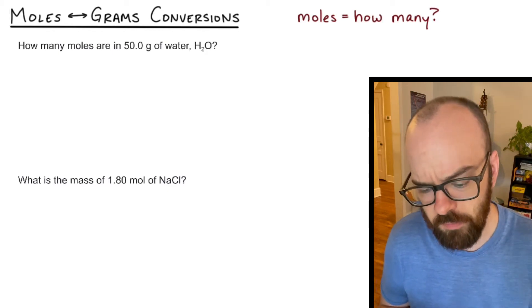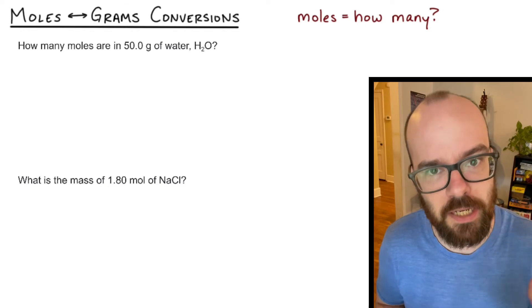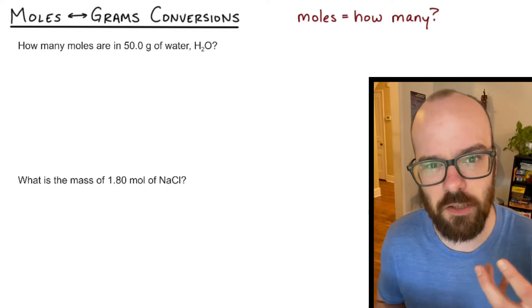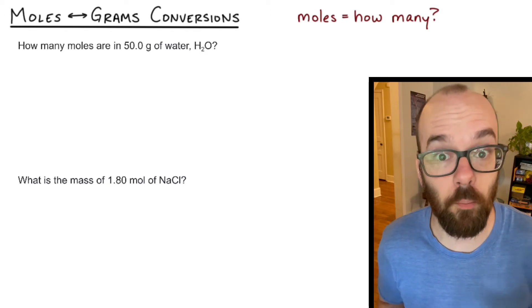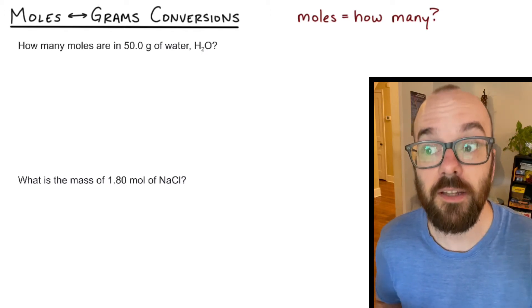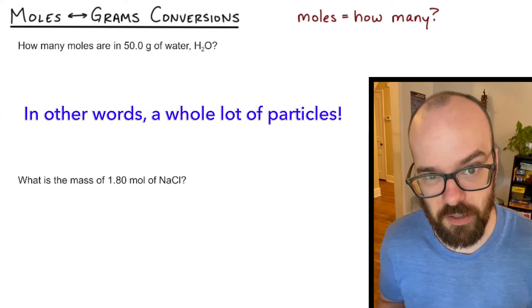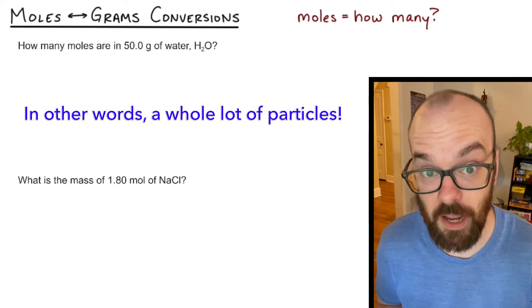Now when we talk about moles and grams, moles refer to how many of something there are. It's kind of like using the word a dozen. If I have four dozen, that means I have 48. If I have four moles, it means I have four times 6.02 times 10 to the 23rd particles of the substance. So it's a way to count how many of something that I have.